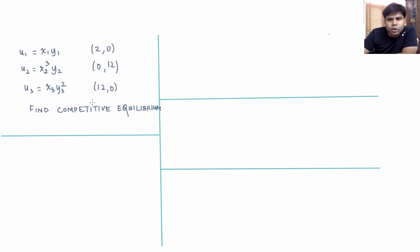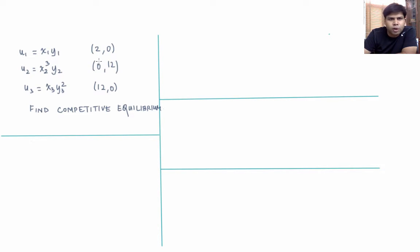In this video we'll learn how to solve a competitive equilibrium. Individual 1's utility function is Cobb-Douglas x1 y1. Individual 2's utility function is x2 cube y2. Individual 3's utility function is x3 y3 square. The endowment of individual 1 is 2 units of x and 0 units of y. Endowment of individual 2 is 0 units of x and 12 units of y. Endowment of individual 3 is 12 units of x and 0 units of y. We want to find the competitive equilibrium following a four-step procedure.